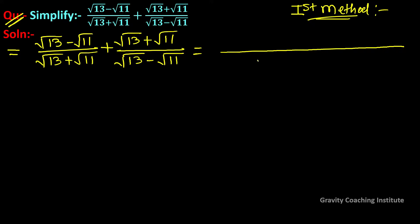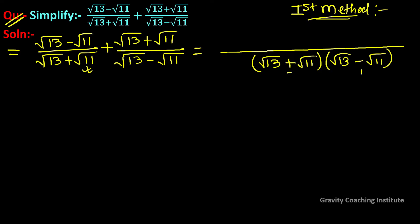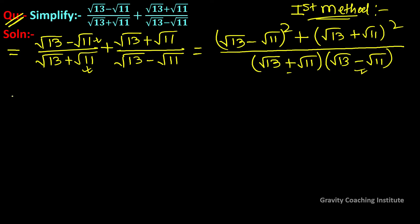For the first method, we multiply (√13 + √11)(√13 - √11) in the numerator and denominator. Similarly for the second term, we multiply (√13 - √11) and (√13 + √11) all squared. Now we will use algebraic identities.